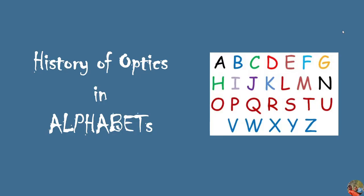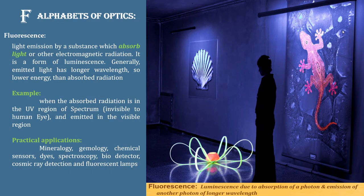Let's talk about the Children's History of Optics in Alphabets Series, Part 2, F to J. F — everyone knows fish, but in optics, F means fluorescence. Fluorescence is a very, very important concept that every student should understand.